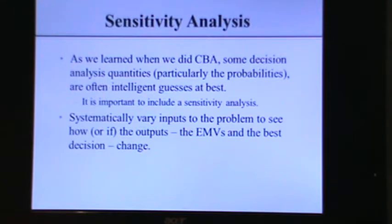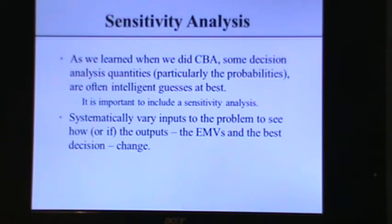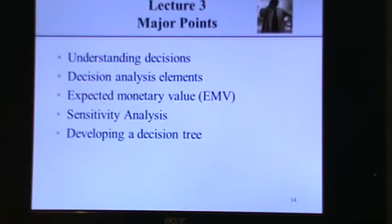Just like in cost-benefit analysis in assignment two, we need to do sensitivity analysis on our decision — what if we're off in terms of how much we get for selling the script to movies, or off in terms of probabilities? We save the original model, copy it, then start changing input variables to see if the decision changes. How far can you change the expected outcomes or the probability ratios before the decision switches back to selling to TV? That's what sensitivity analysis is all about.